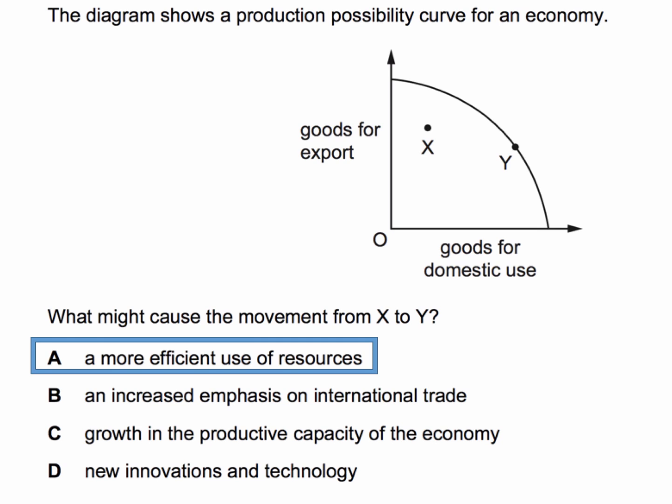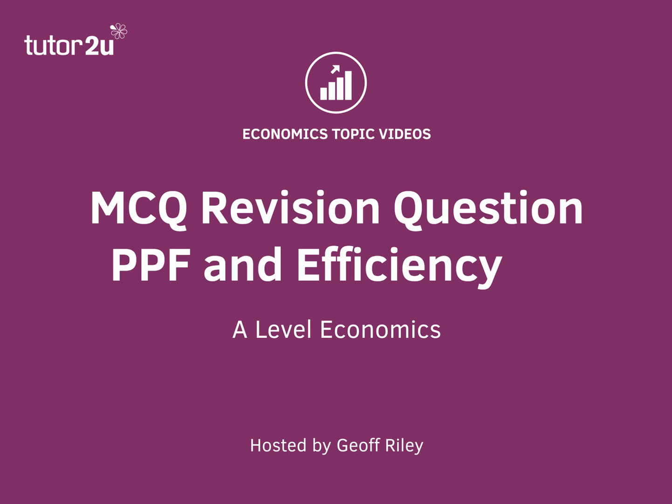B is wrong because, of course, we're shifting resources away from goods for export towards goods for domestic use. And options C and D would both cause an outward shift in the production possibility curve, rather than a movement from within it to the frontier. So C and D would cause a shift in the PPF — hence, that's the answer to this question.